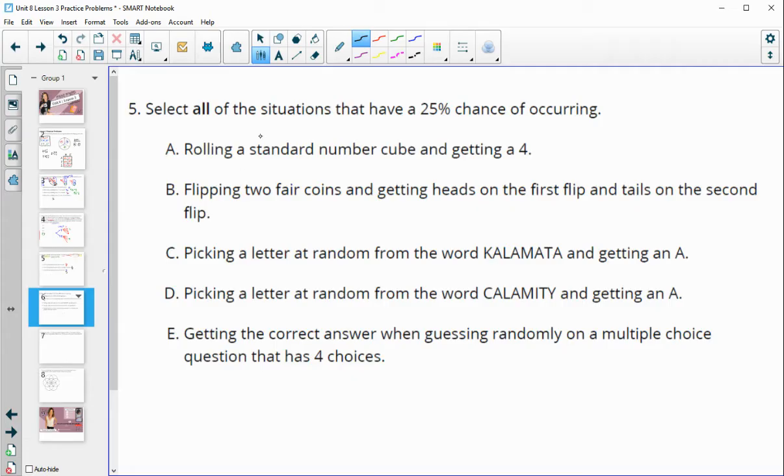Number five, select all situations that have a 25% chance of occurring. So think about 25% as a decimal, that's 0.25, and as a fraction, that's one-fourth. So any of those are going to be a 25% chance. So rolling a standard number cube, and remember, a standard number cube has the numbers 1, 2, 3, 4, 5, and 6 on them. So getting a 4, there's one 4 out of six chances. That does not equal 0.25 or one-fourth. So that is not a 25% chance.